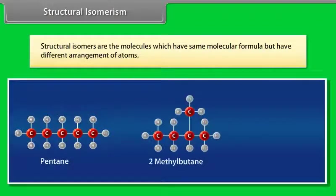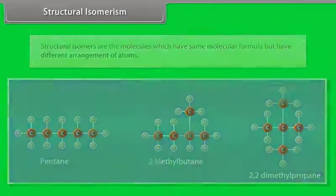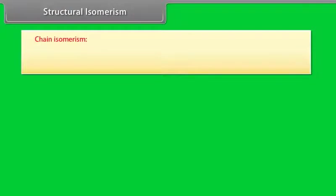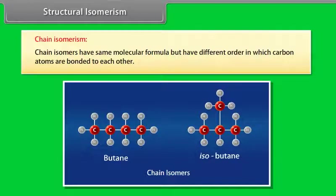Structural isomers are molecules which have the same molecular formula but have different arrangements of atoms. Chain isomers have the same molecular formula but have a different order in which carbon atoms are bonded to each other.